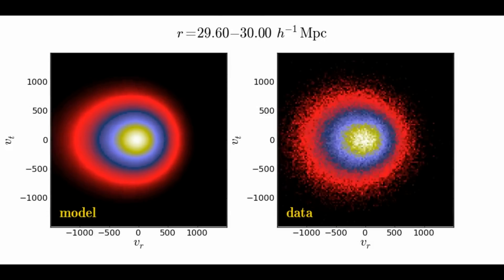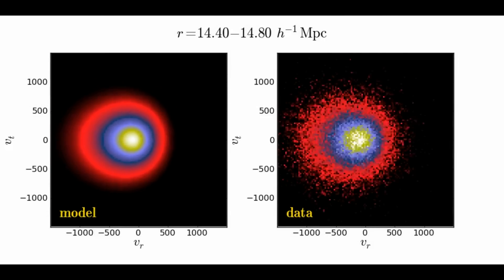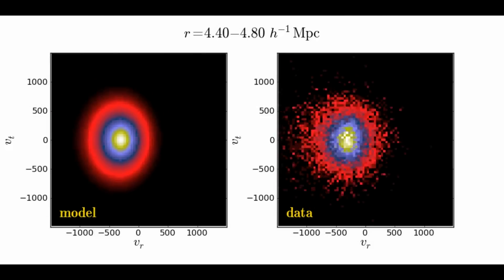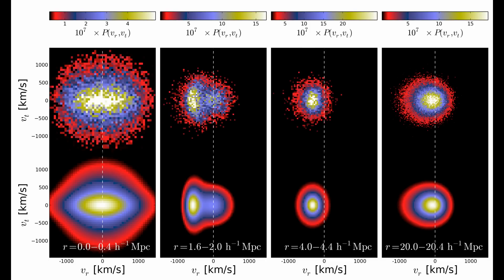To model ξ_cgs, we need to understand the average galaxy infall kinematics around clusters. This animation shows the joint probability distribution of radial and tangential velocity of galaxies as a function of cluster-centric radius from 40 to 0 h-inverse megaparsecs.